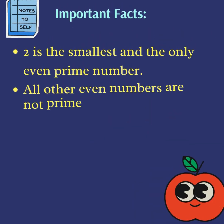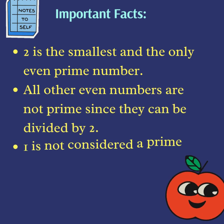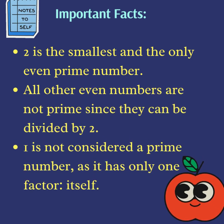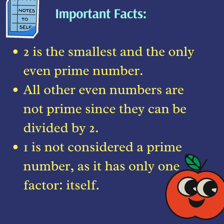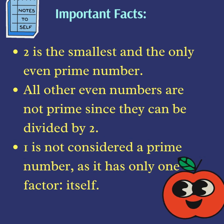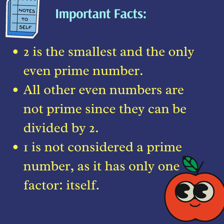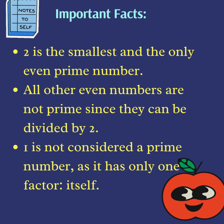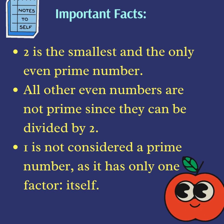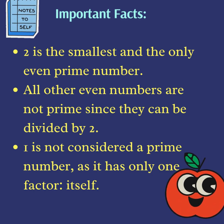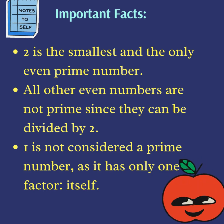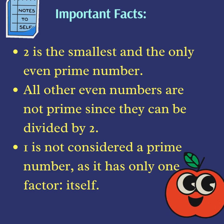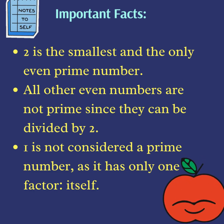Important facts: Two is the smallest and only even prime number. All other even numbers are not prime because they are divisible by two. One is not a prime number — it has only one factor, which is itself.